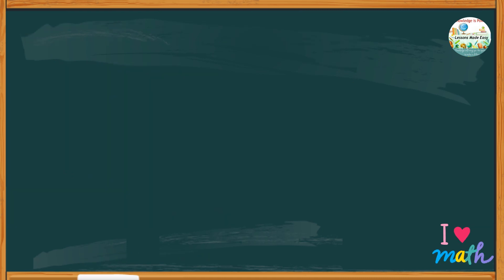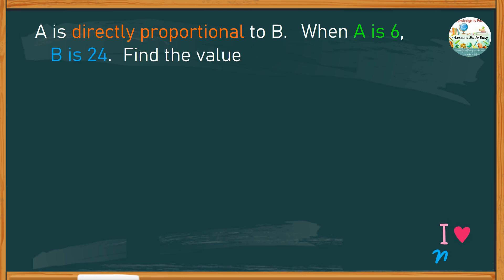How about this problem? A is directly proportional to b. When a is 6, b is 24. Find the value of x when c is 15. Clearly, this problem follows the rule of 3,